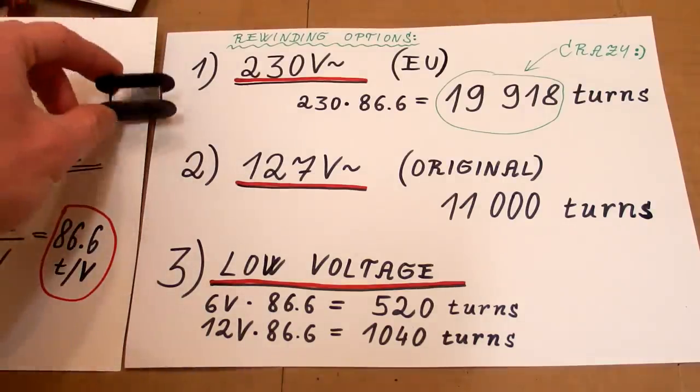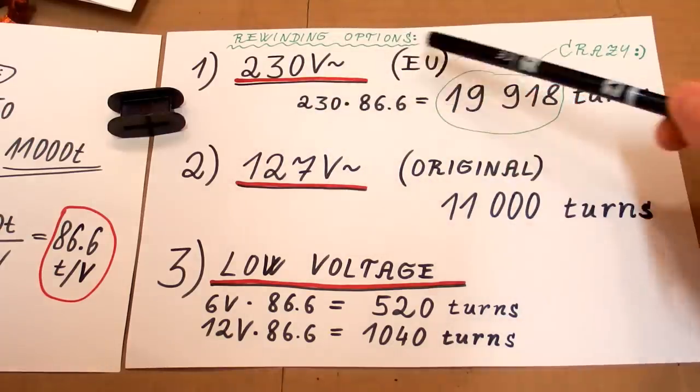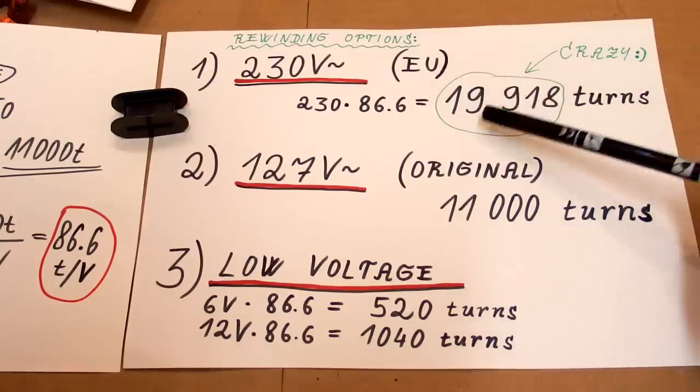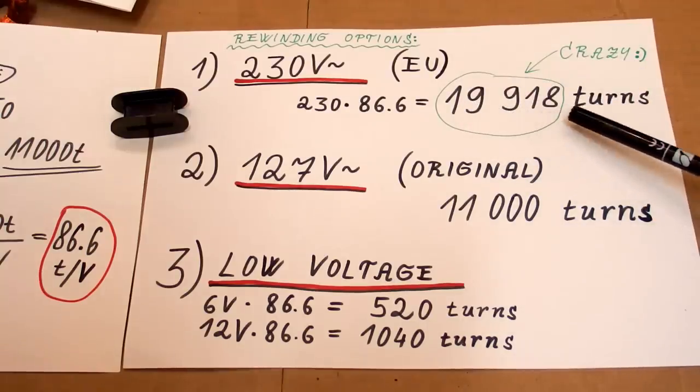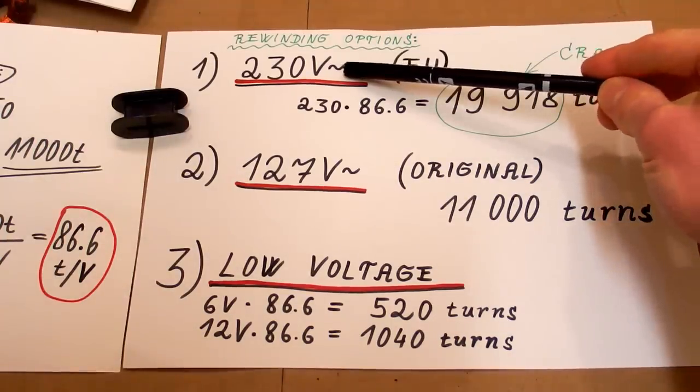So now let's try to rewind it because the spool is okay. Here you can see the options. The first option is to rewind it for the European voltage but this means about 20,000 turns which is completely crazy. Of course you can do it using a drill or something but at this high voltage there is also a risk of failure.